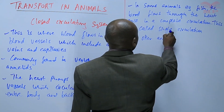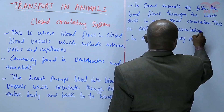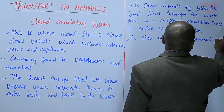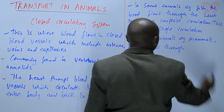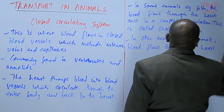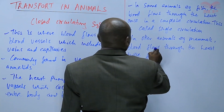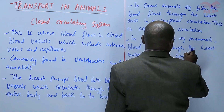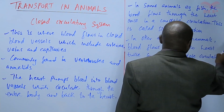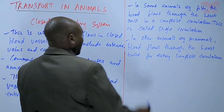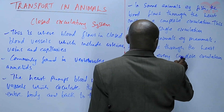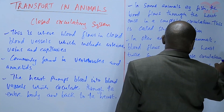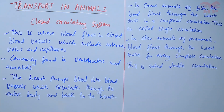In other animals, for example mammals, blood flows through the heart twice for every complete circulation, and this is called double circulation. We are going to discuss both types, starting with single circulation.